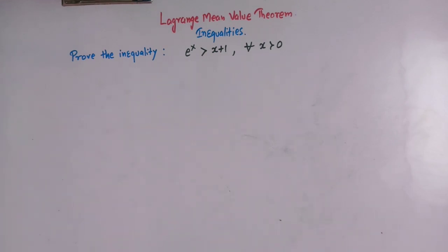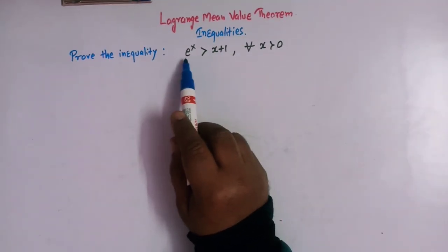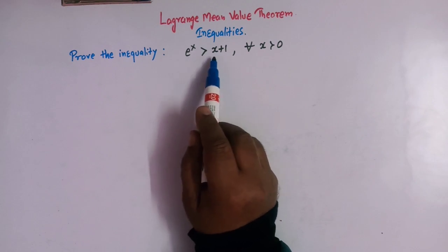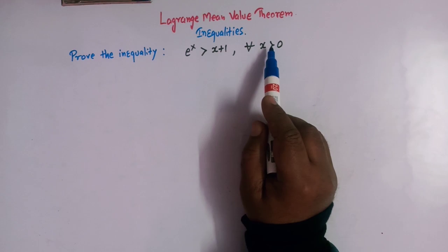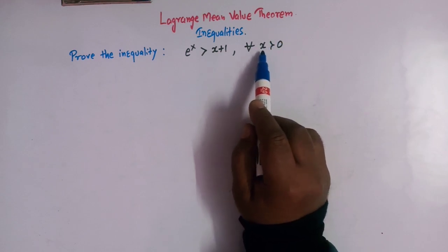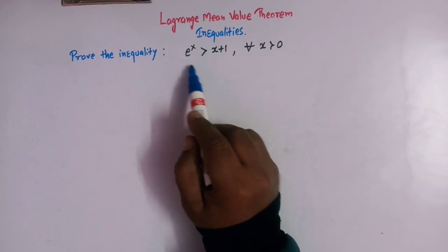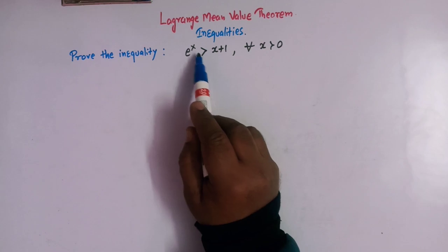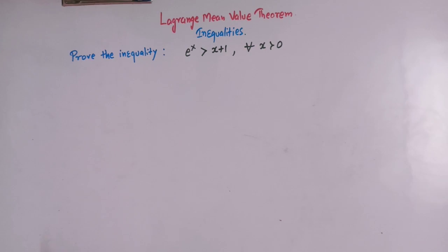So let us start. We have to prove this inequality: e raised to x is always greater than x plus 1 for all x greater than 0. So for all positive values of x, we have this inequality that e raised to x is greater than x plus 1. We'll apply Lagrange's mean value theorem to prove this inequality.